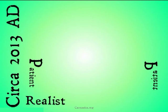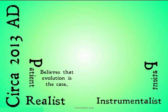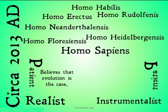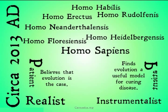Jump forward about 2000 years or so. You have two cancer patients. One of them is a scientific realist, one of them is a scientific instrumentalist. The realist believes that evolution is the case and wants his doctors to use theories based on evolution to help cure him. The scientific instrumentalist, on the other hand, finds evolution a useful model for curing disease, but doesn't believe in evolution — or maybe just suspends judgment on it because he's not really sure. As you can see, the instrumentalist can get the same treatment as the realist and will still remain rational, being able to hold that evolution can be a useful model without judging that it's actually telling us something about the way the world works.